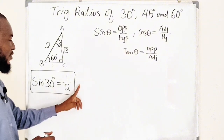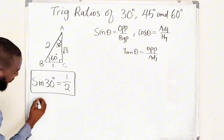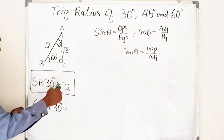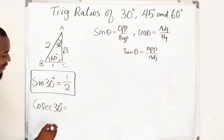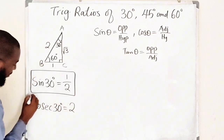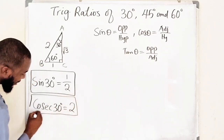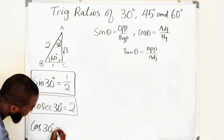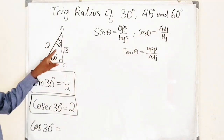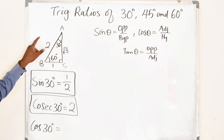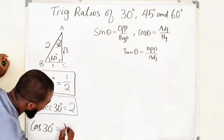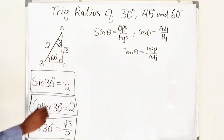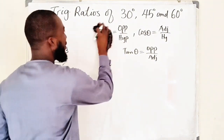Before we move to cosine, I need to find the reciprocal of sine of 30 degrees, which is cosecant of 30 degrees. The reciprocal of one over two — just flip it upside down — becomes two over one, which is two. So cosecant of 30 degrees equals two. Next, cosine of 30 degrees equals adjacent divided by hypotenuse. The adjacent side is root three and the hypotenuse is two, so cosine of 30 degrees equals root three over two.